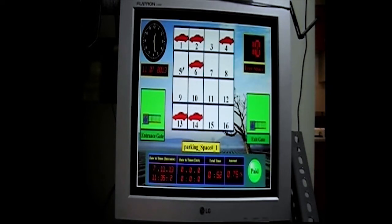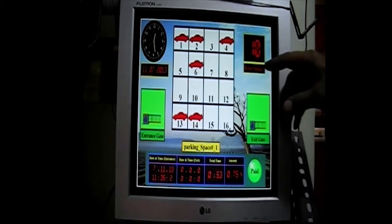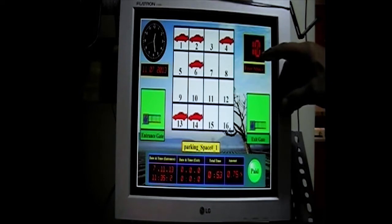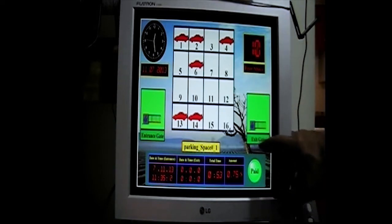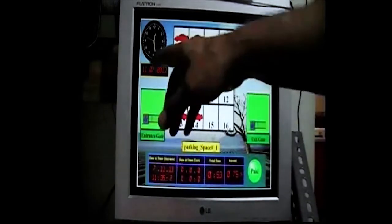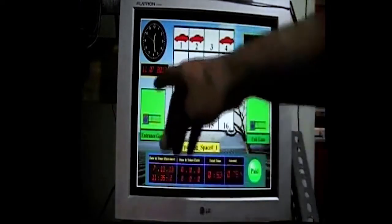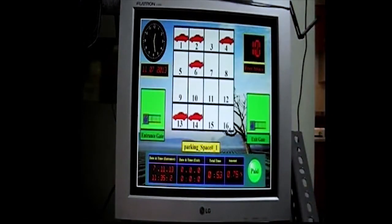The unoccupied spots are 3, 7, 8, 9 to 12, and 15 and 16. As you see here, these are the available spots in the parking. These are exit gate, entrance gate, current time, and this is of course the date.